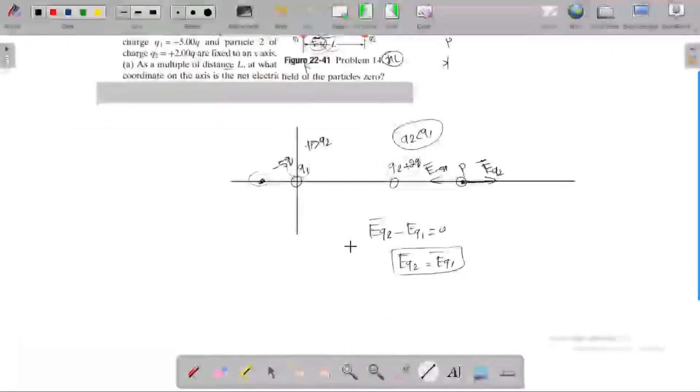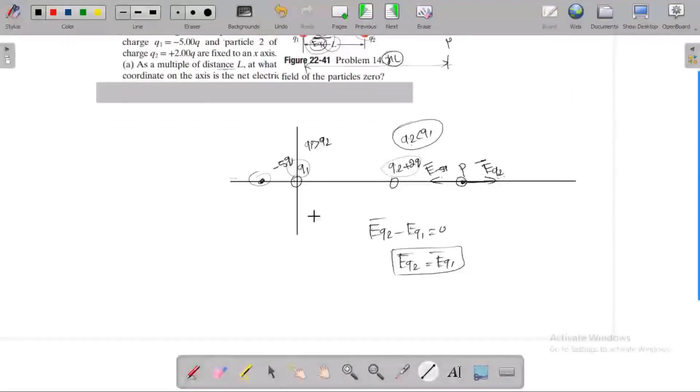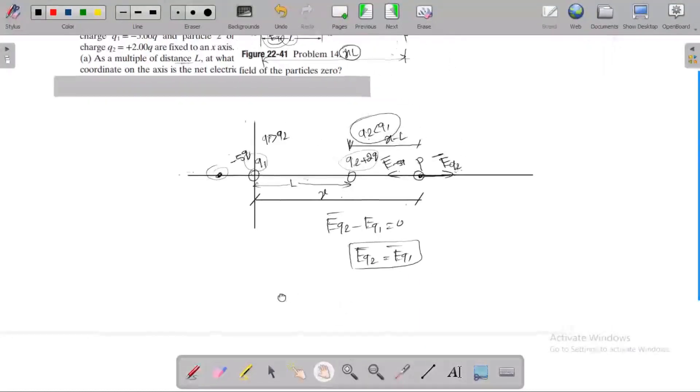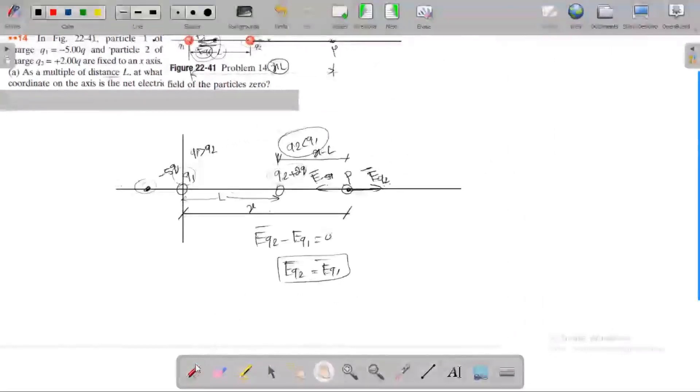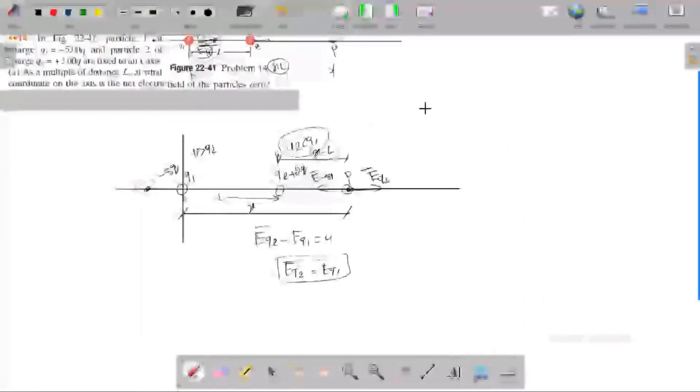I'm taking the reference point as the origin. The distance to point P is x. The distance between the two charges is L. The distance between particle 2 and point P is x minus L. So we need to find this distance.